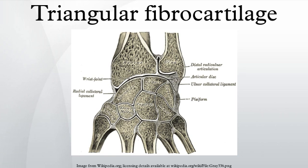Perforations and defects in the TFCC are not all traumatic. There is an age-related correlation with lesions in the TFCC, but many of these defects are asymptomatic. These lesions commonly occur in patients with positive ulnar variants. Chronic and excessive loading through the ulnocarpal joint causes degenerative TFCC tears, which are a component of ulnar impaction syndrome.